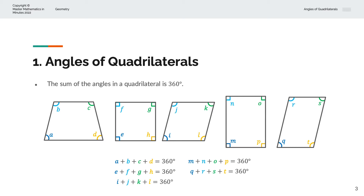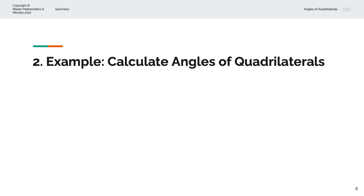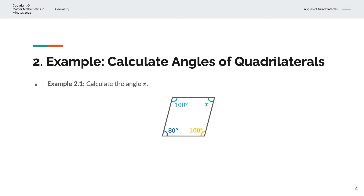We'll consider a couple of examples now. In the first example, we're asked to calculate the angle X. We're given a rhombus, and we know that the sum of all of the angles in a quadrilateral — or in this case, a rhombus — is equal to 360 degrees. So X equals 360 degrees minus 100 degrees, minus another 100 degrees, and minus 80 degrees. That gives us X equal to 80 degrees.